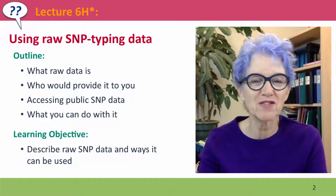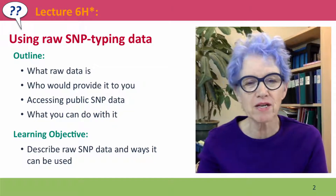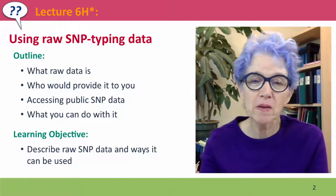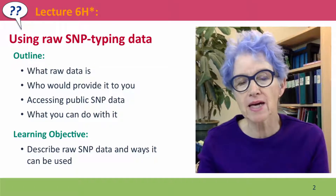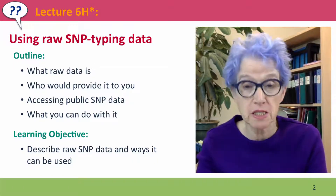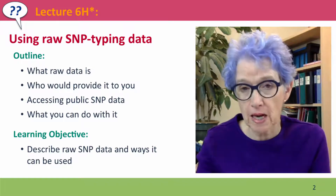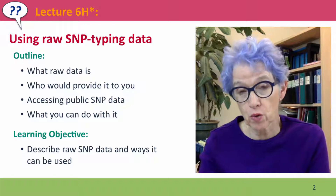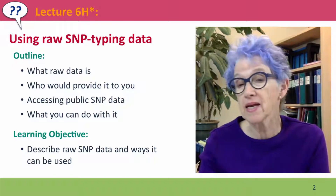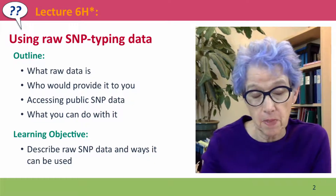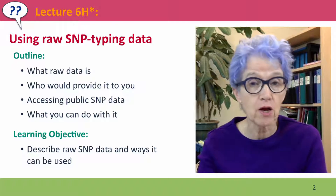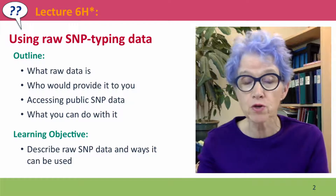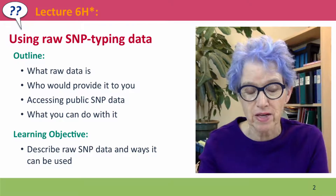Hi everyone, welcome back to Useful Genetics. This is an extra little video after lecture 6H, giving you a little bit of information about accessing and using raw SNP typing data — that's data that hasn't been analyzed by somebody else for you. First I'll show you what the raw data looks like and how you might be able to get it. We'll also talk about how you can get raw SNP data of other people's genomes and what you can do with it once you have it.